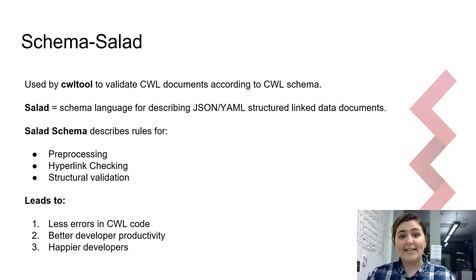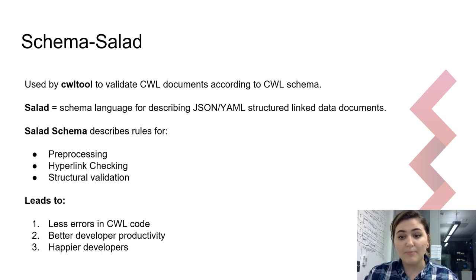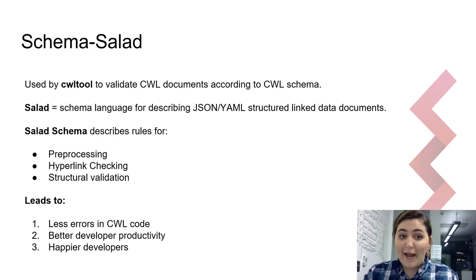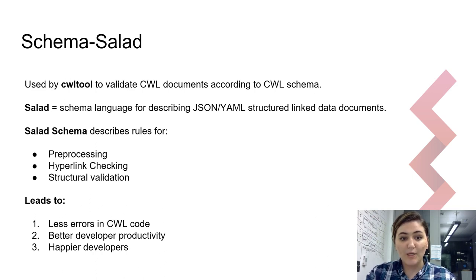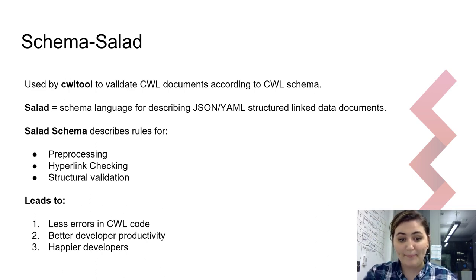That previous validation was done with Schema Salad. The Schema Salad library is under the CWL organization and is used by cwltool to validate CWL documents according to CWL schema. So even if you haven't directly used Schema Salad, you have probably used it if you've used cwltool. Salad refers to the Schema Language for describing JSON or YAML structured linked data documents. Salad schema describes rules for preprocessing, hyperlink checking, and structural validation — things that lead to fewer errors and better developer productivity.